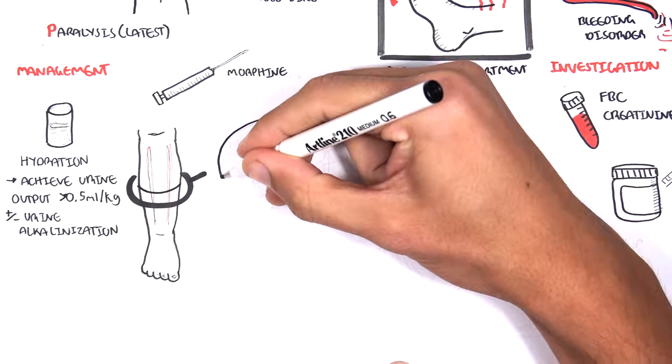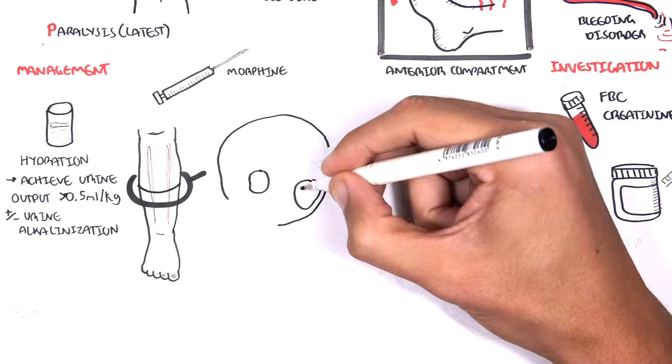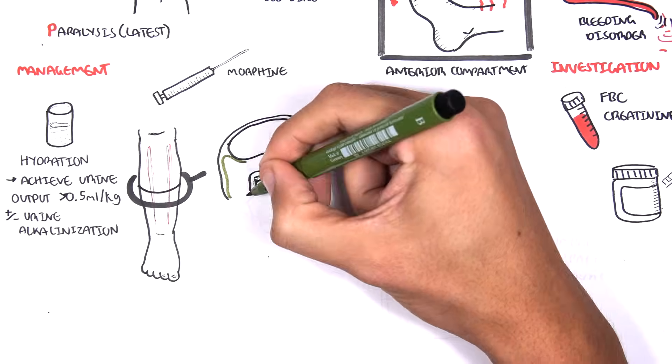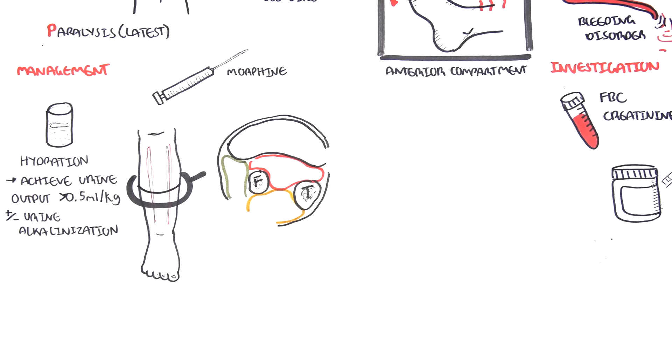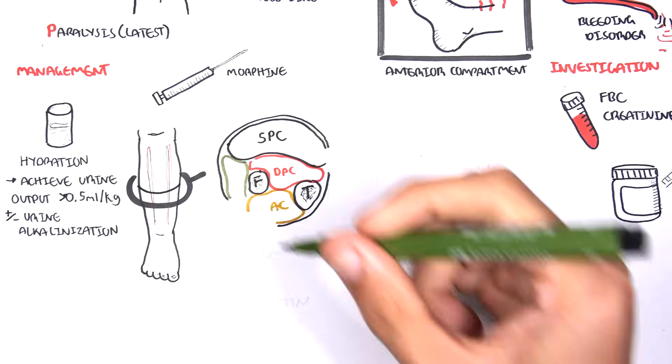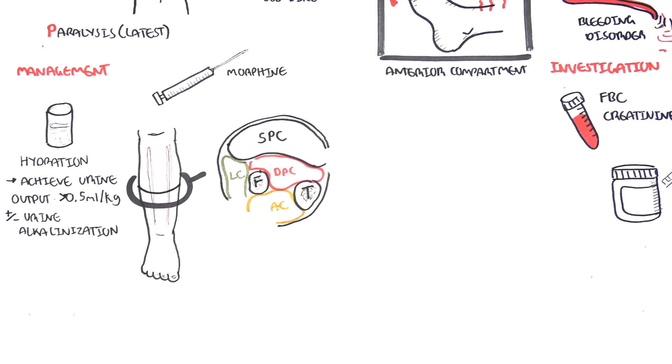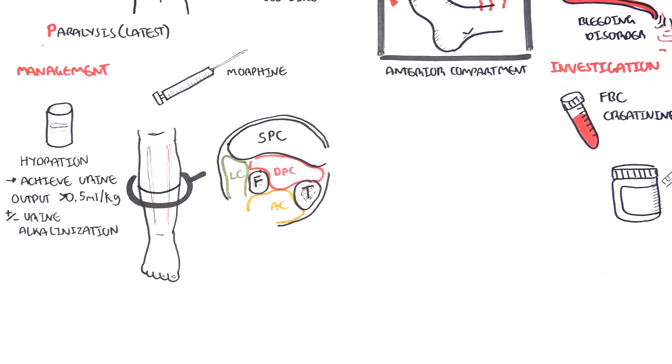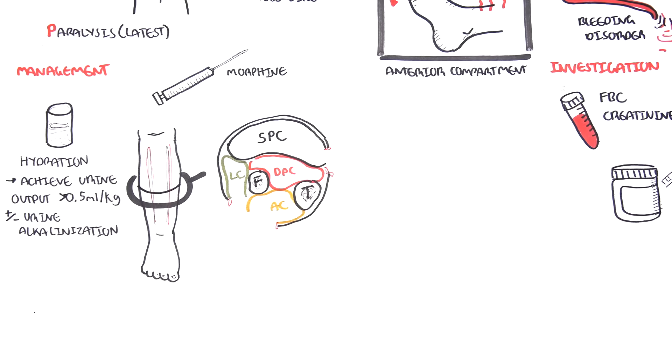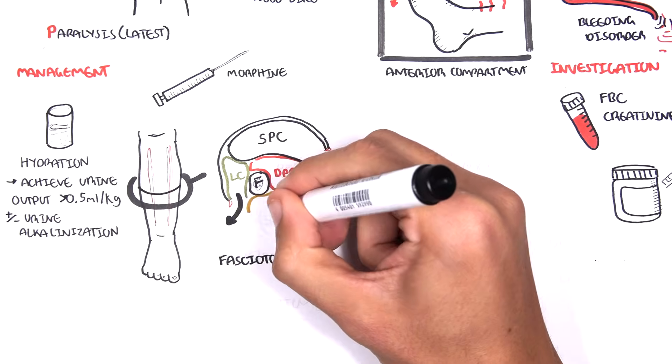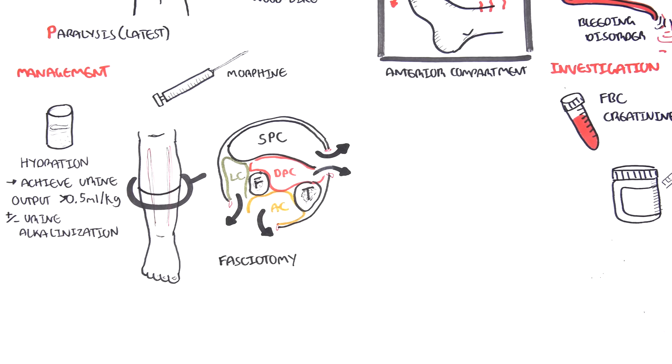For example, let's go back to the same scenario, the same image where we have all the compartments of the leg having increased pressure. A fasciotomy aims to make the least number of cuts to the body to decrease the compartment pressure. For the leg, therefore, the incisions are made on either side of the tibia, which will cover all four compartments and thus decrease pressure in all four compartments.